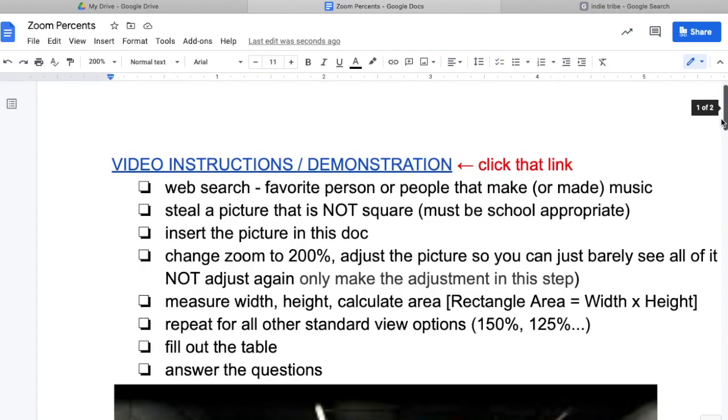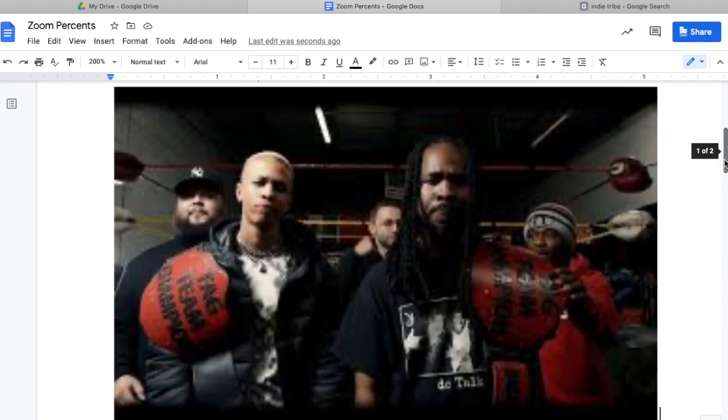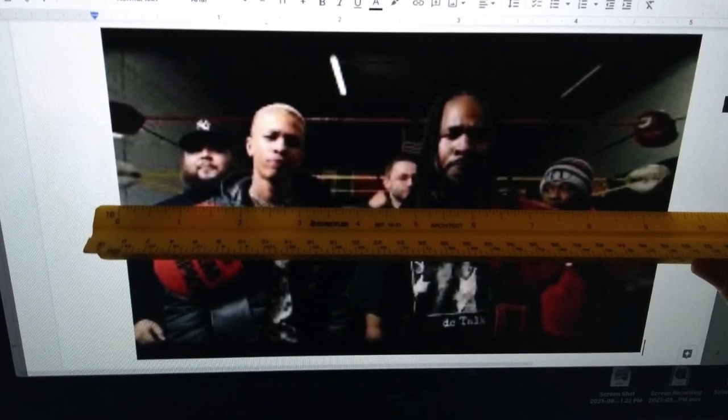Measure the width, height, and calculate the area. Rectangle area equals width times height. So you're gonna measure the width - that will involve holding a ruler up to the screen. Looks like this.